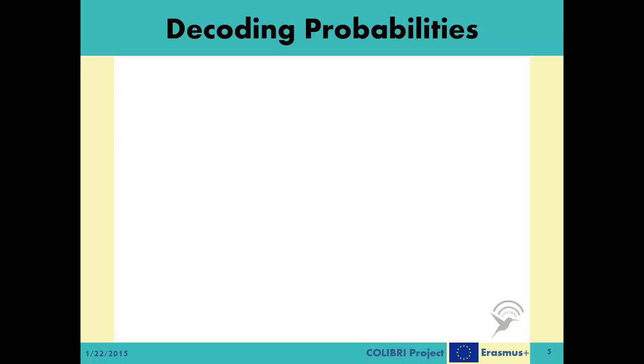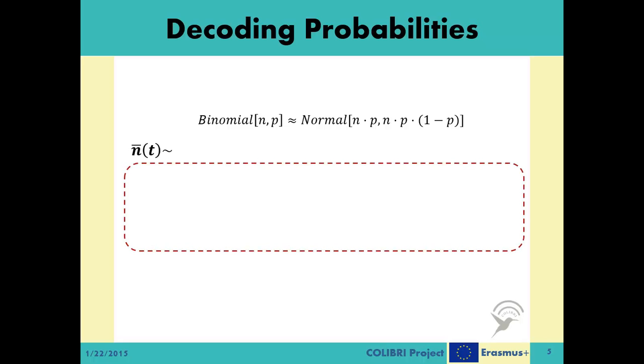To calculate these four probabilities, we first approximate the binomials to normal random variables. A binomial random variable given in the form N, P can be approximated to a normal random variable with N times P, N times P times 1 minus P. Following this approximation, the N̄t can be approximated in this fashion from a binomial random variable into a normal variable like this.